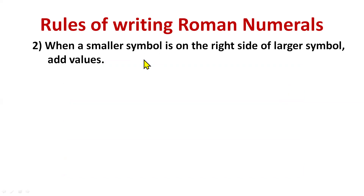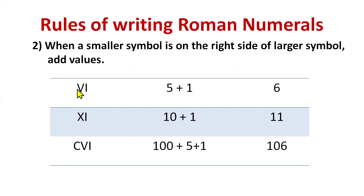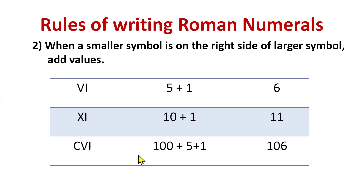Second rule: when a smaller symbol is on the right side of a larger symbol, add the values. For example, VI — V is the larger symbol (5) and I is smaller (1) on the right, so 5+1 = 6. XI means 10+1 = 11. CVI means 100+5+1 = 106. So when the smaller symbol is on the right side, you add.